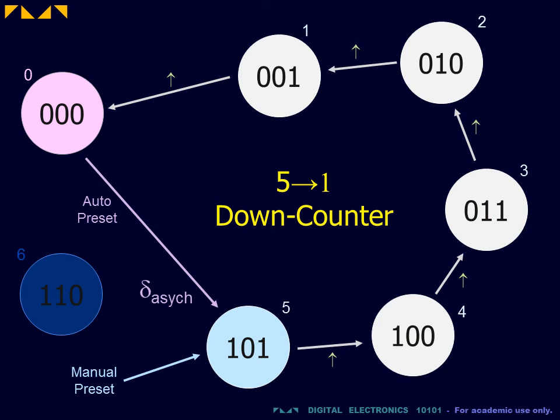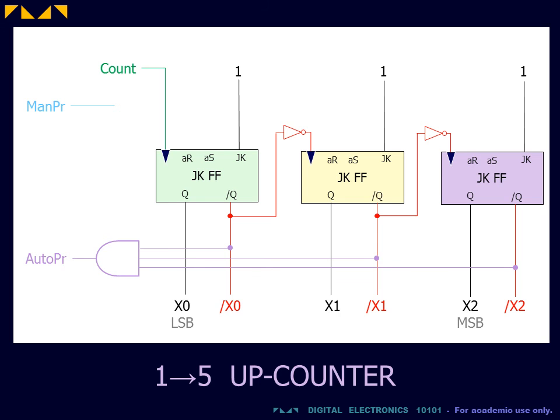From the 0 0 1 state, the counter will be clocked into the next state, which happens to be the 0 0 0 state, from which it will immediately auto-preset back to the initial state. The new auto-preset will therefore detect the 0 0 0 state, and the new preset will now force the 1 0 1 initial state.